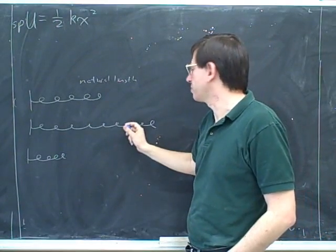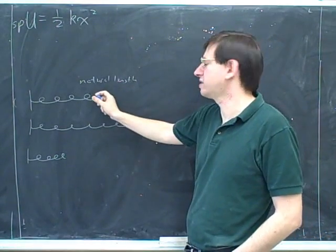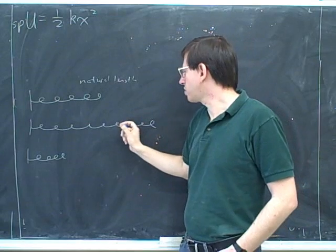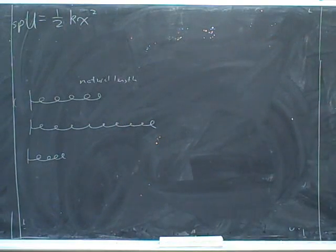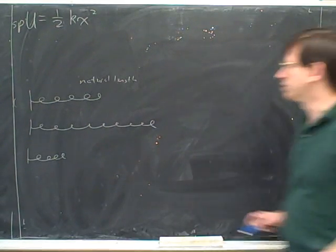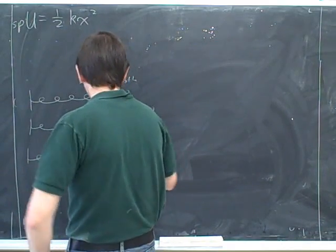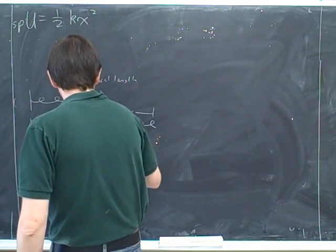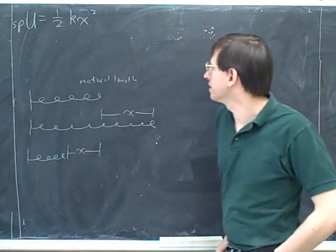So let's see if we can label what x would be for this spring down here. If this is the spring of the natural length, try to draw in what distance represents x in that picture. That's good. And how about for this spring? What distance represents x there? So over here, the displacement from the natural length would be this. And over here, the displacement from the natural length would be this.